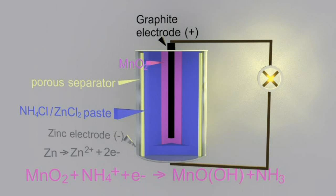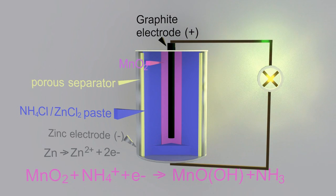And then those electrons are taken up at the graphite where the manganese(IV) oxide reacts with ammonium ions and the electron to make MnO(OH) and ammonia gas.